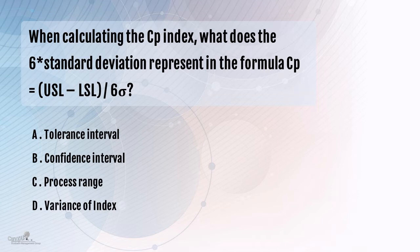In the denominator, we have 6 times the standard deviation. From the property of normal distribution, you would know that 3 times the standard deviation on either side covers 99.73% of the data. In essence, on the numerator we are looking at what the customer wants, and in the denominator, we are saying what the process is capable of delivering.